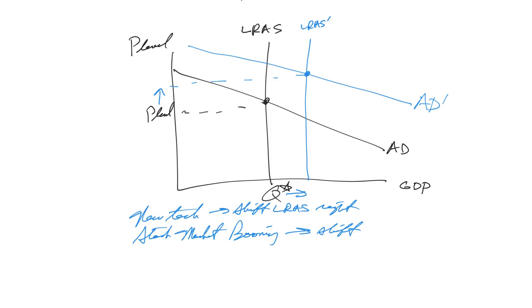This is what we would call inflationary growth. Just note that we have growth. Long-run aggregate supply is shifted to the right. We have an increase in GDP. But also notice we have an increase in the price level. And that is because aggregate demand shifted out further than aggregate supply.